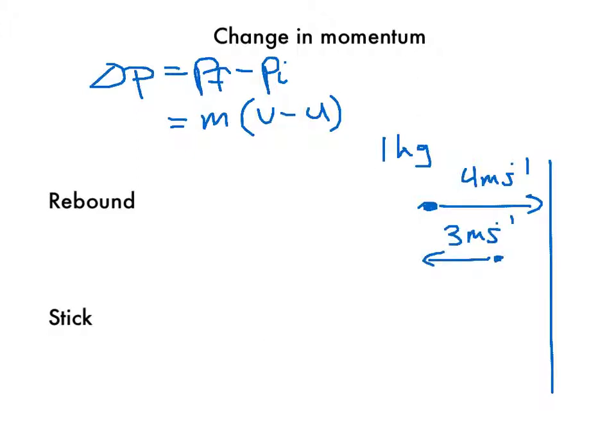Now remember, velocity is a vector, so we need to define one of these directions as positive and one as negative. So if that ball has rebounded, what is its change in momentum? And which will be greater? Will there be a greater change in momentum for rebounding or for sticking? Let's have a look.